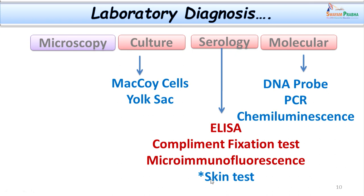The skin test is yet another mode of diagnosis. In this test, antigen derived from yolk-sac-cultured chlamydial organisms is injected intradermally in the forearm of the patient. At the end of 2 to 4 days, nodule formation of more than 10 millimeters in size is considered a positive test. Molecular diagnostic methods available are the nucleic acid amplification test, DNA probe, PCR, and chemiluminescence test.